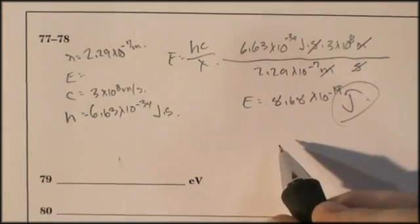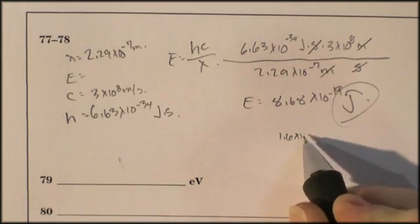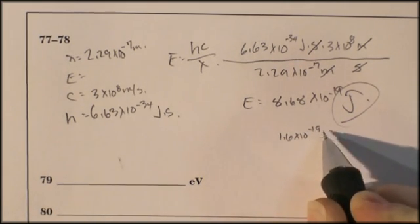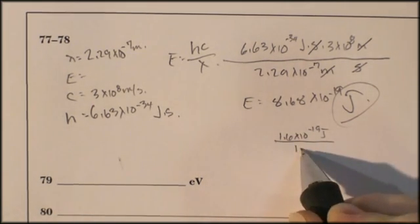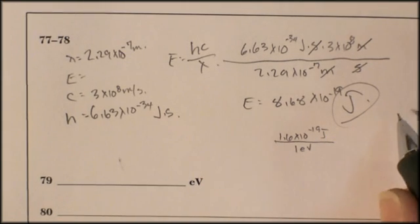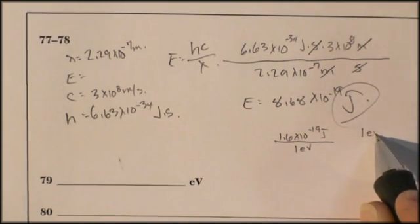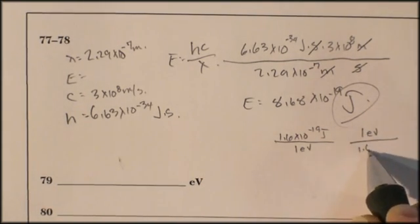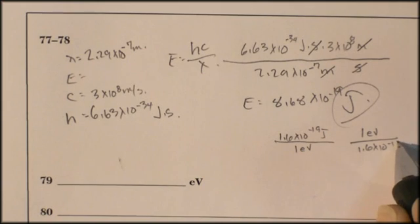And we're told it's 1.6 times 10 to the negative 19 joules. So that's a conversion factor. I can say it's 1.6 times 10 to the negative 19 joules is equal to 1 electron volt. Or I can also say 1 electron volt is equal to 1.6 times 10 to the negative 19 joules.